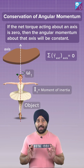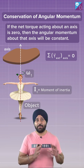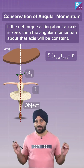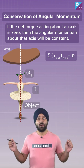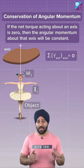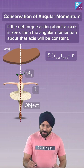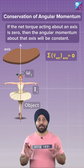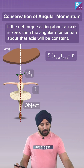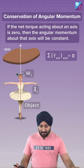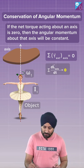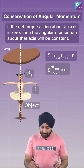When her hands are away from her body, her moment of inertia is large. But when she folds her hands back, her moment of inertia decreases. However, the net torque about the axis remains 0. So in this case, if the net torque about the axis is 0, then the change in angular momentum is also 0, meaning angular momentum remains conserved.